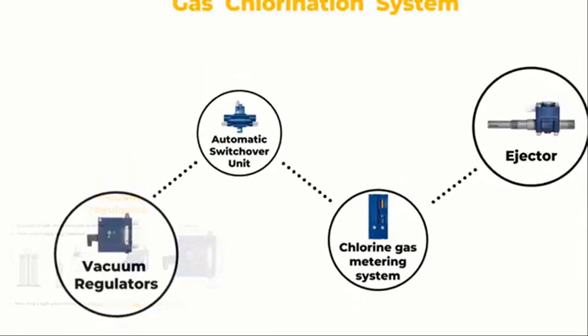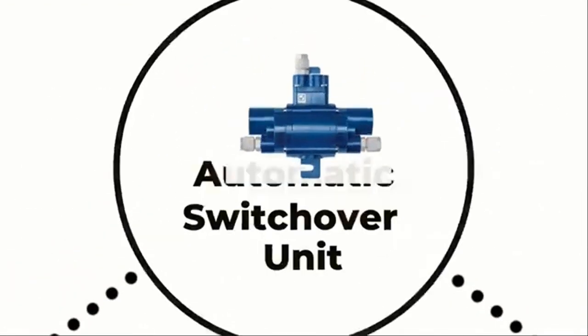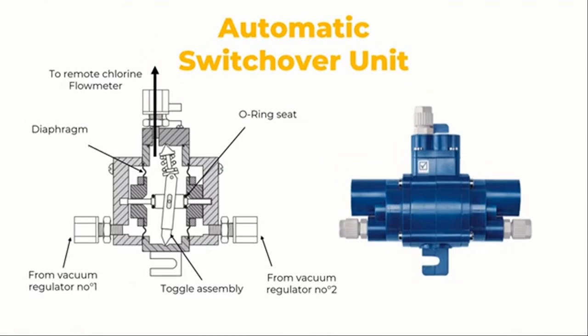The switchover system is the second element. For continuous chlorination, it converts the chlorine supply from an empty chlorine source to a full chlorine source. It's entirely vacuum operated. The wall-mounted automated vacuum switchover module must be toggle operated and spring loaded. The switchover components are made of molded plastic that can be used with wet or dry gas, and all of the springs are made of tantalum alloy.